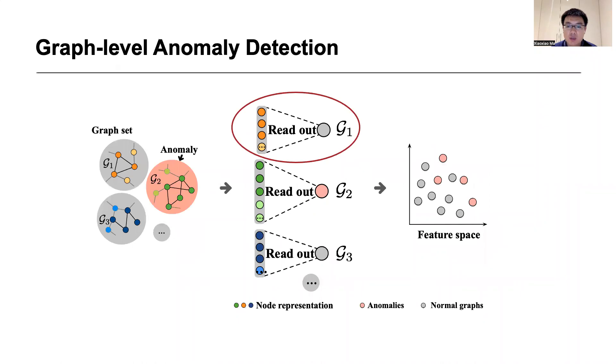To detect anomalies, existing methods read out a graph's representation from its own nodes and then spot anomalies as outlier points in the feature space. As can be seen, the readout functions only consider intra-graph information, while cross-graph information is not explicitly explored.